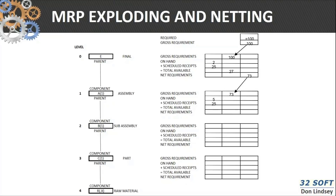The net requirement of the parent becomes the gross requirement of the component. In this case we have 5 on hand and a scheduled receipt for 25, giving us 30, then we've got 43 that drives down to component C1. C1 has a gross requirement of 43; after on-hand and scheduled receipts, you can see that we don't have any net requirements for component four. That's the explosion and netting process for those components.